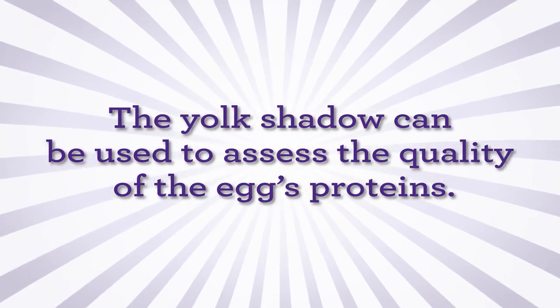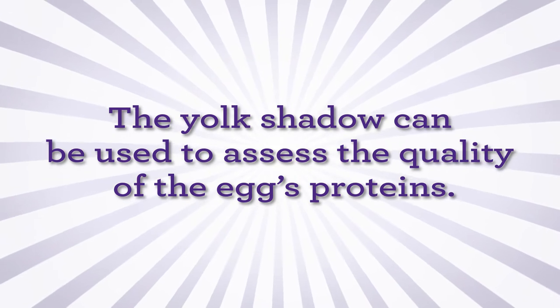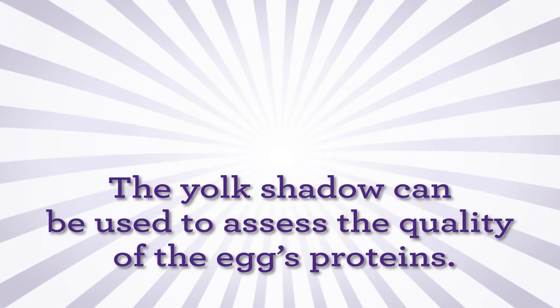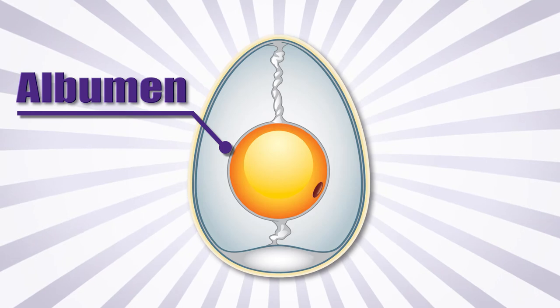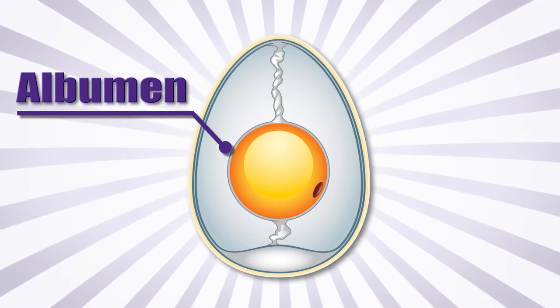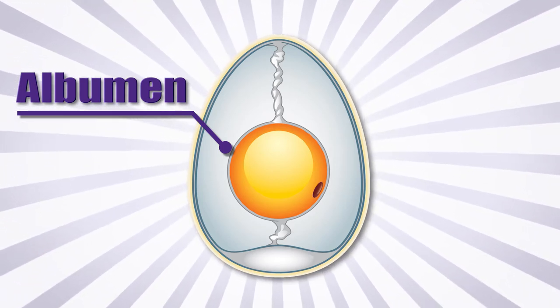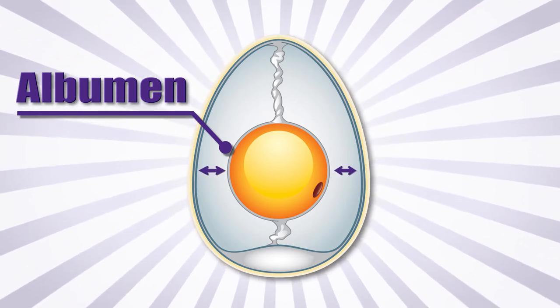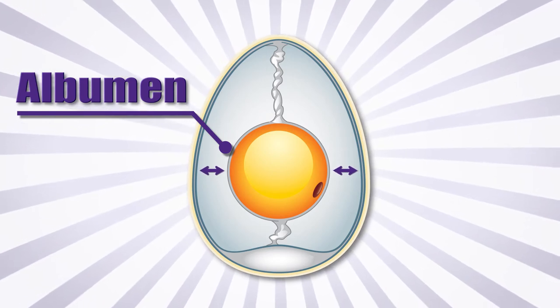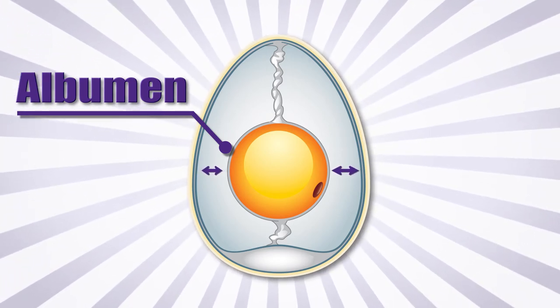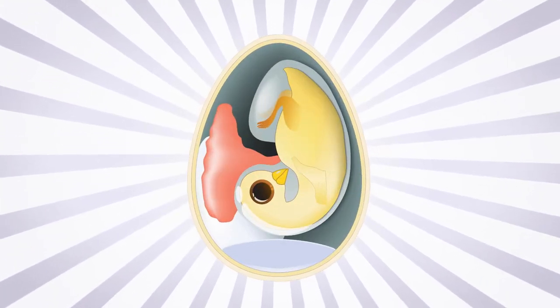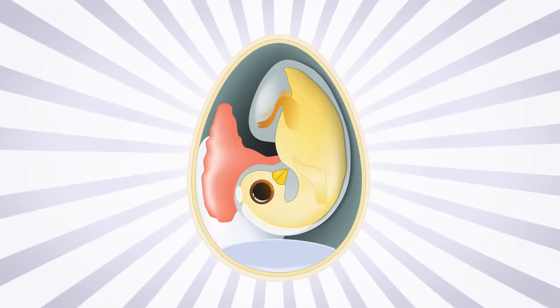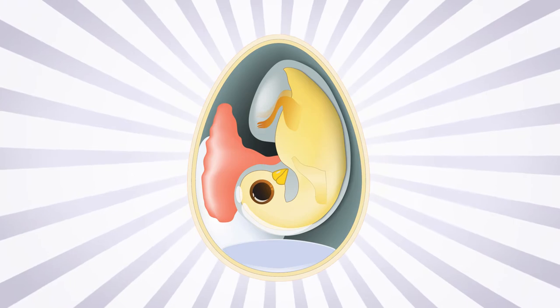The yolk shadow can be used to assess the quality of the egg's proteins. As an egg ages, proteins in the egg white, or albumin, break down, reducing the egg white's ability to hold the yolk centered. A fresh egg with high quality proteins will hold the yolk in the middle of the egg, preventing the yolk from hitting the side of the egg. This is important because if the egg could contain a growing embryo, you would not want to hurt it by having it hit the shell.